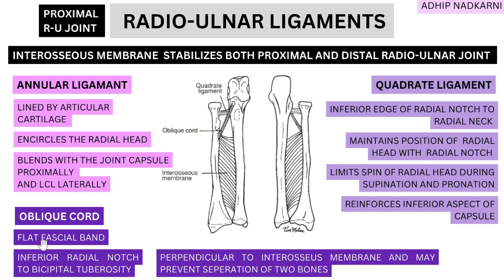Moving on to the third ligament — the oblique cord. It is a flat fascial band. Its attachment goes from the inferior aspect of your radial notch down to your bicipital tuberosity. It is exactly perpendicular to your interosseous membrane, and it is thought to help in preventing the separation of the two bones — the radius and ulna. Those are the three major ligaments, and apart from that, between the two bones there is also the interosseous membrane, which helps stabilize both the proximal and distal radio-ulnar joint.